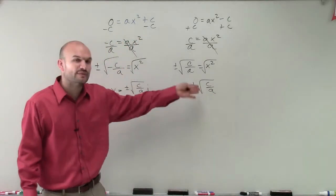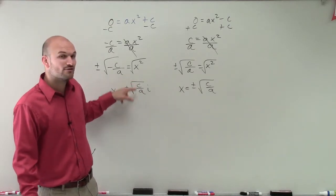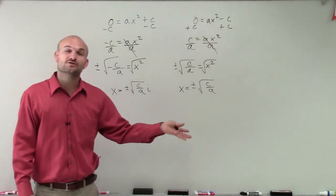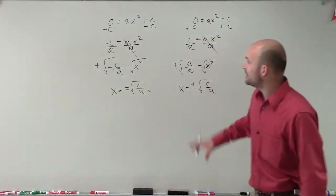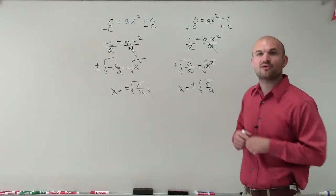And there's a couple different things. We need to make sure we rationalize the denominator. You can break this up. The square root of c over a can be broken up into the square root of c divided by the square root of a. We're also going to look into some examples where we're going to rationalize the denominator and so forth. But in the general case of solving by the square root method, this is the process that we're going to use.